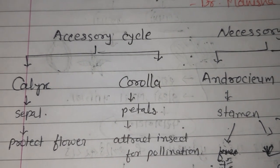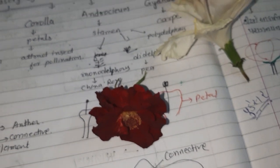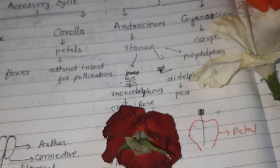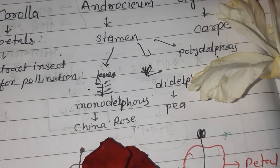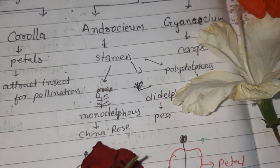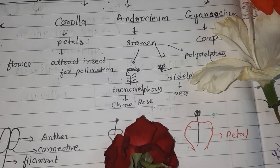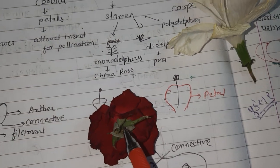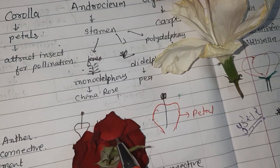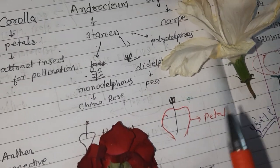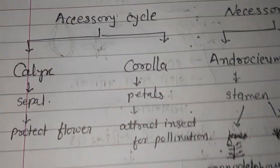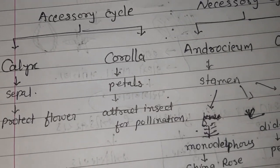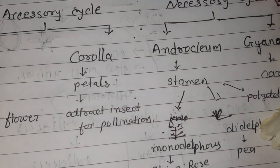Calyx, its basic unit is sepal. This is a rose flower and you can see here this green one, this green one is sepal. So many sepals unite and they form calyx. Now what is the function of the sepals? These sepals protect the flowers in bud condition.